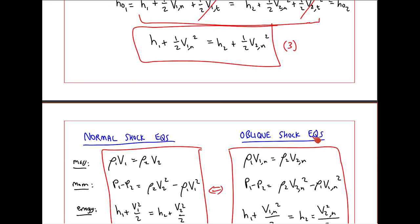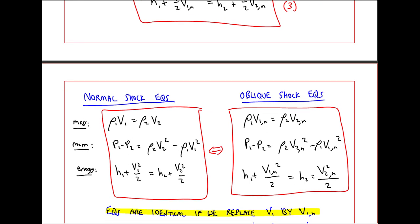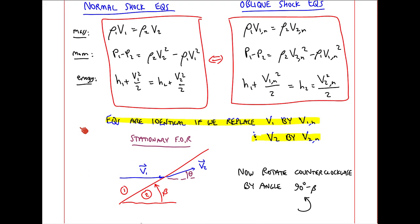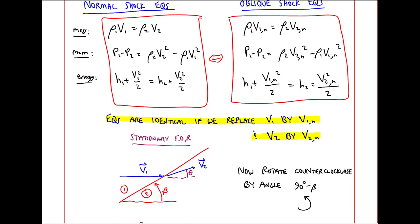Now I want to compare the normal shock equations and the oblique shock equations. These are the mass, momentum, and energy equations for a normal shock that we've been using for many weeks now. And these are the three equations that we just derived for the oblique shock. You can see that these equations are identical if we replace V1 by V1N in all three of these equations, and V2 by V2N. Let me look at different frames of references to try to make this more clear.